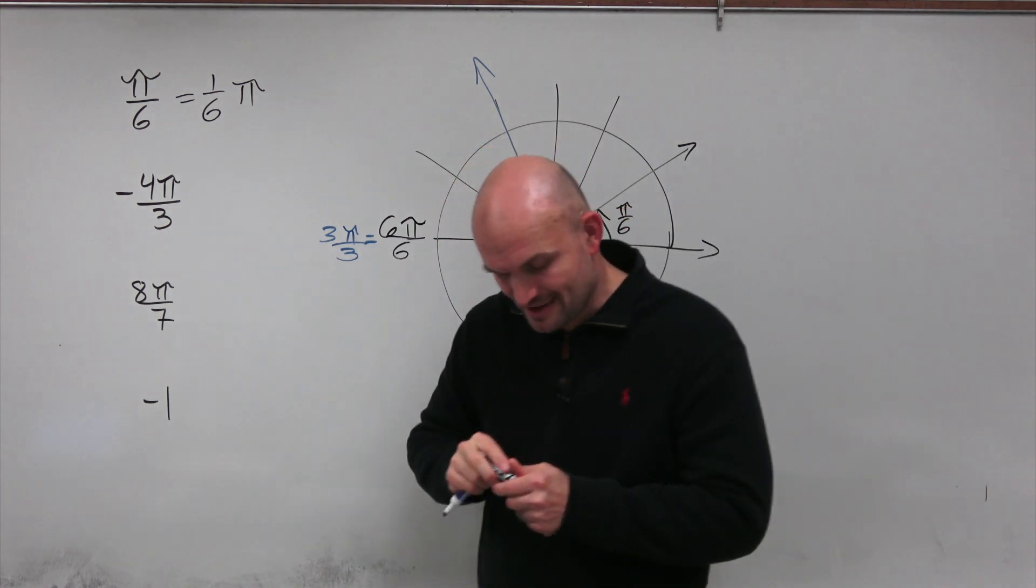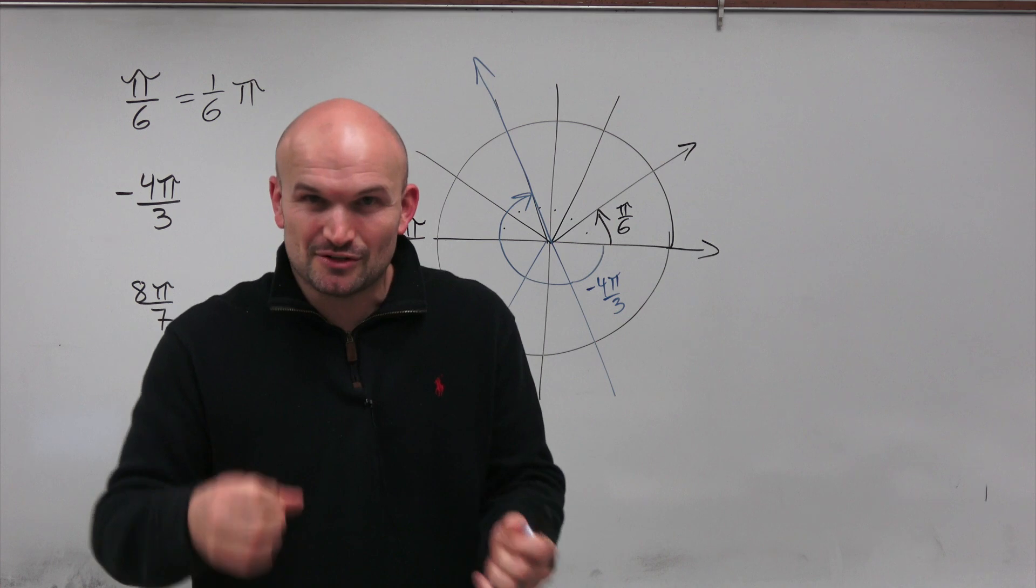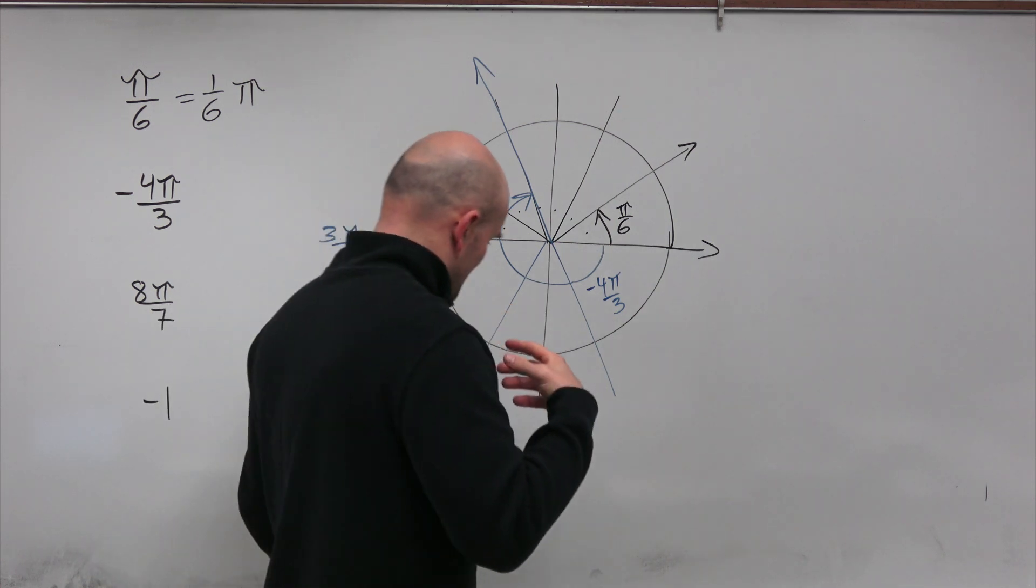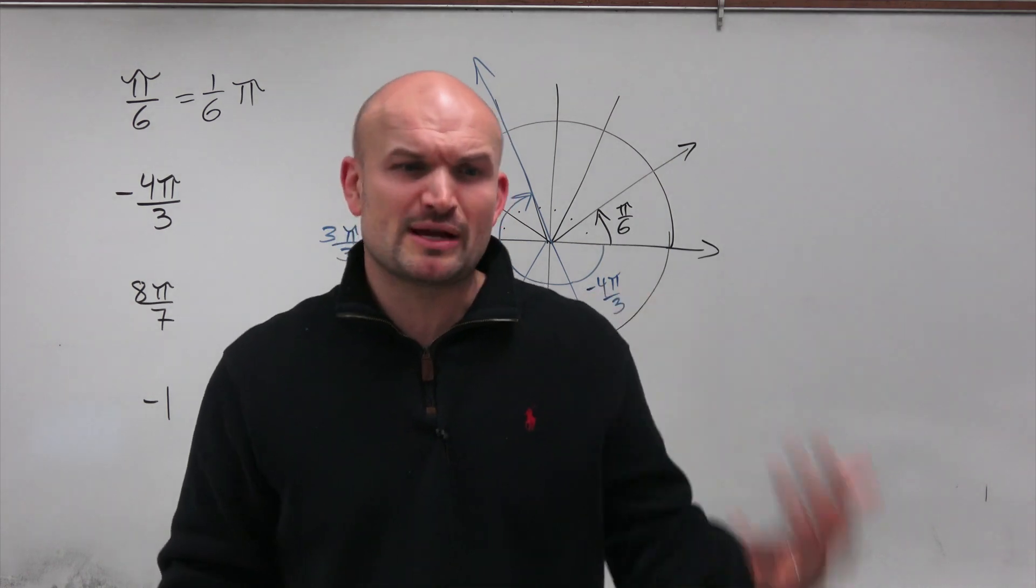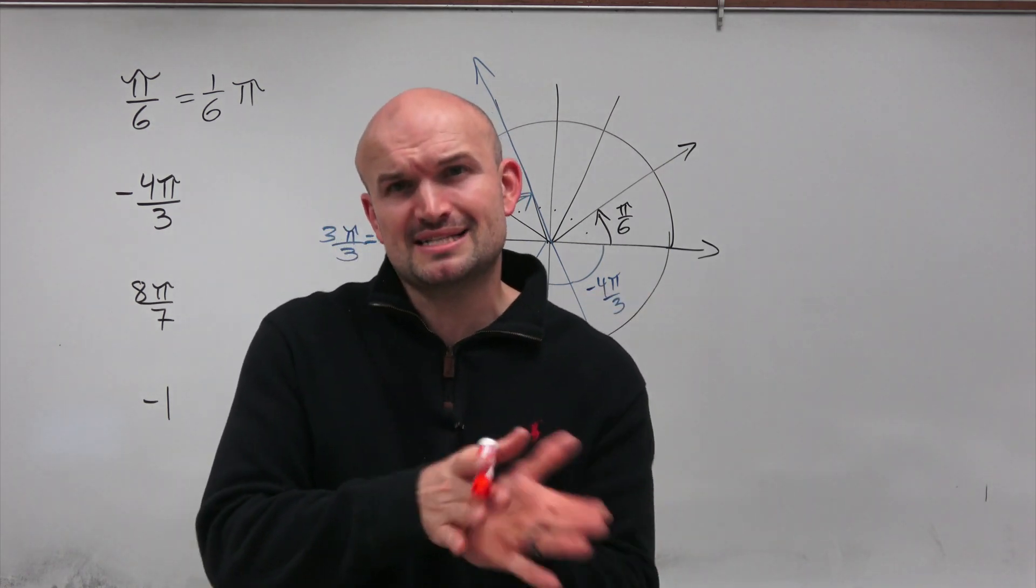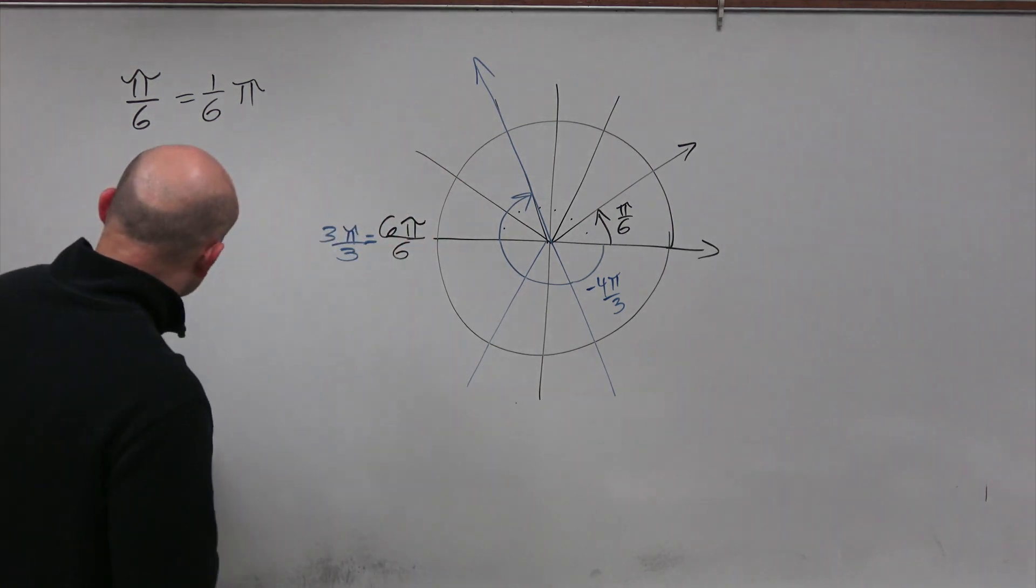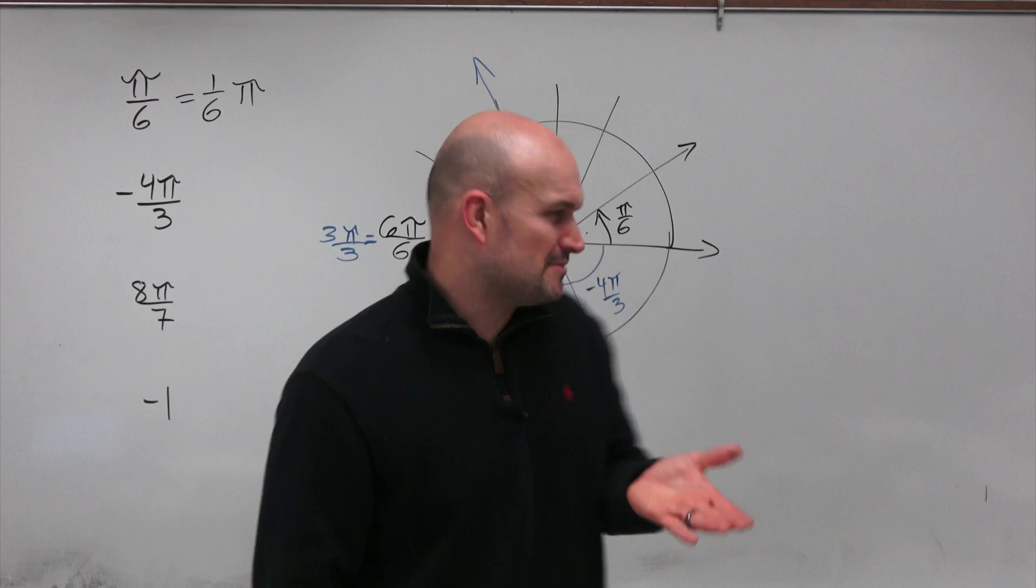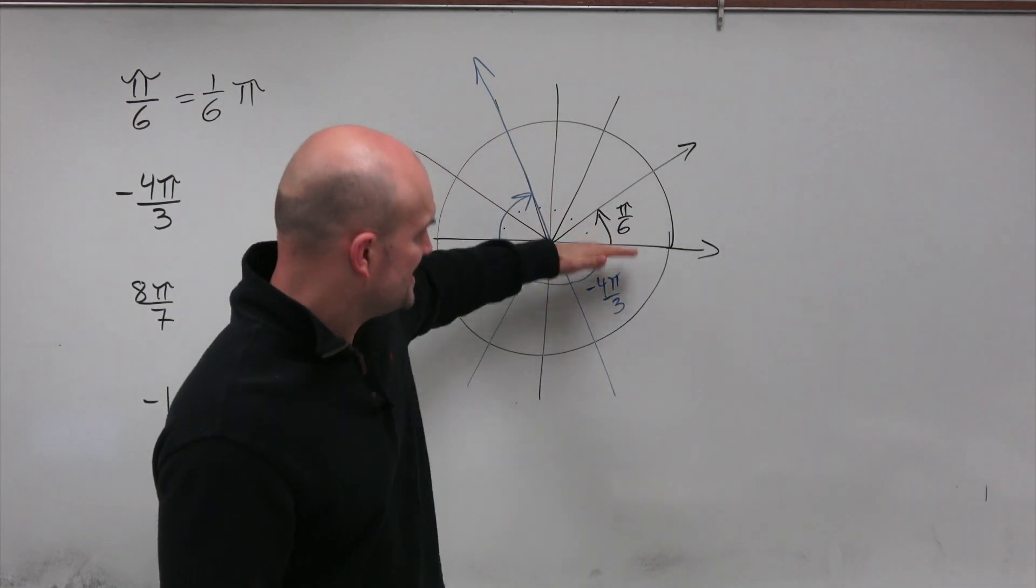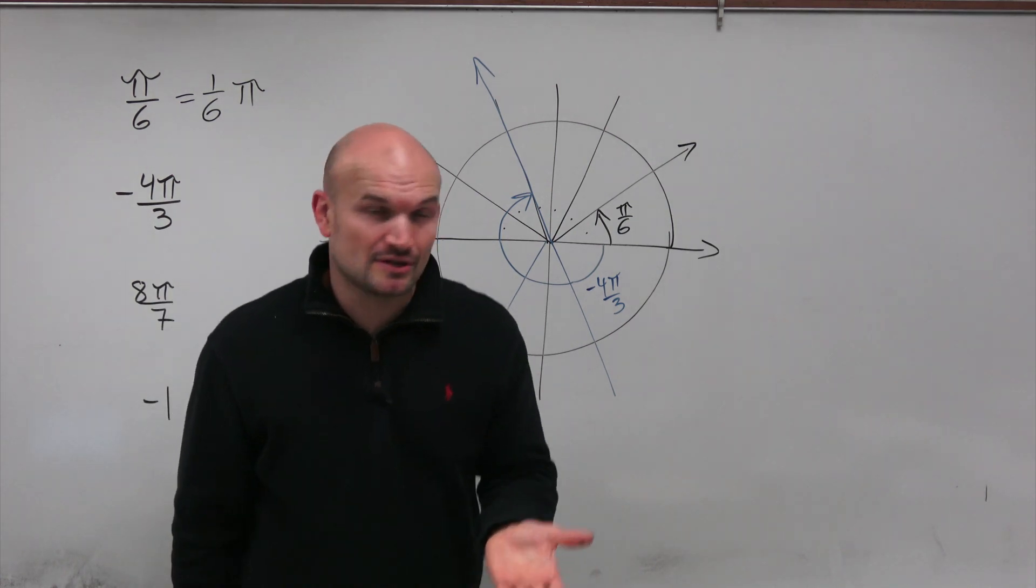All right, now let's get into 8 pi over 7. Now, I really like 8 pi over 7, because when I'm telling my students that they need to sketch their angles, I want them to be close. I want it to be in the right quadrant. And it should be closer to one axis than the other. But I'm not looking for perfection. So 8 pi over 7 is interesting, because how do we break something up into seven parts? Typically, in the fourths, and sixths, and thirds, that's not too bad. But to break it up into seven parts is pretty difficult.